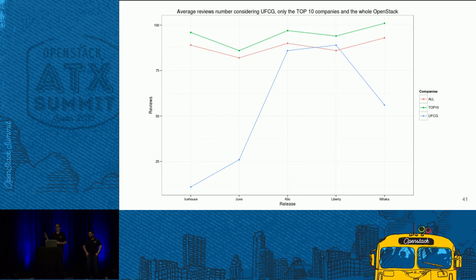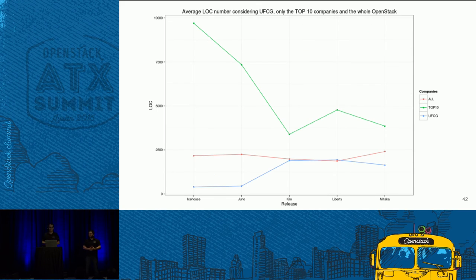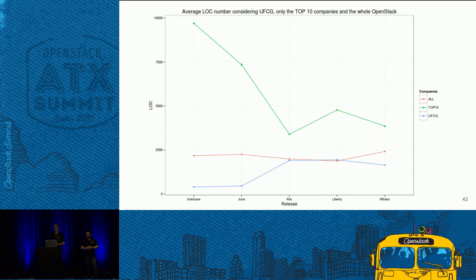Looking at the review numbers, on the Kilo release we were really close to the whole OpenStack average, and on the Liberty release we passed that number. We are learning how to contribute and review code — not just in numbers, but in quality too. On the Mitaka release, we noticed we couldn't pass the code review experience to the new members as well, which is something we need to work on. With the lines-of-code average, on Kilo and Liberty we were working like everyone on OpenStack. The feeling is that independent of where you are, you can contribute like the core. OpenStack is prepared to be global, for everyone in the world.